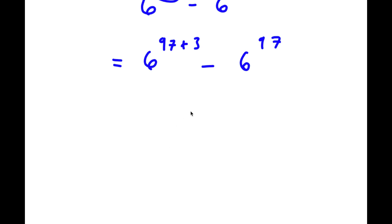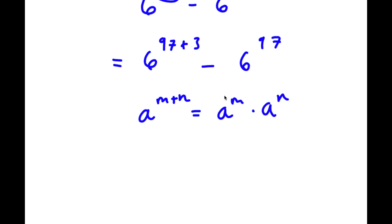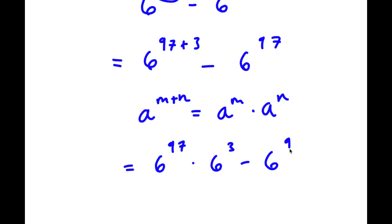Now, if I have something in the form a to the power of m plus n, this is equal to a to the power of m times a to the power of n. So in this case, 6 to the power of 97 plus 3, I can rewrite as 6 to the power of 97 times 6 to the power of 3. Now I have this minus 6 to the power of 97.